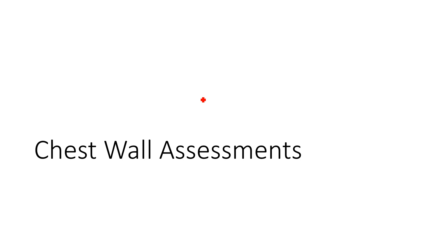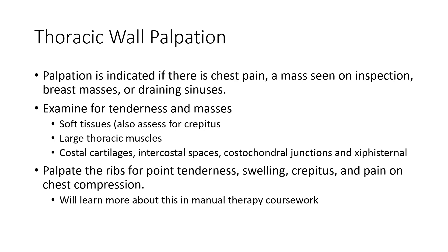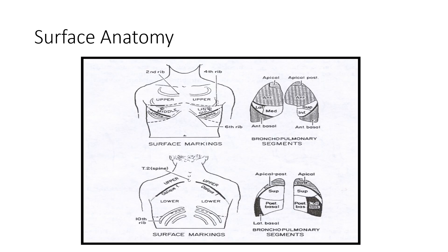The last thing we'll cover is chest wall assessment, focusing on mobility deficits. We're going to palpate the thoracic wall — palpation is indicated anytime a patient has chest pain or if we observe a mass on inspection. That's why inspection is so important; you can do much of your examination before even putting your hands on the patient. We look for tenderness, masses, and crepitus of the tissue, including the thoracic muscles like the lats and pecs, and assess the costal cartilages and ribs for tenderness, swelling, crepitus, or pain on compression. Palpation remains part of the chest exam for patients with respiratory conditions as well.